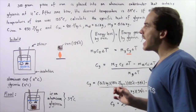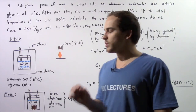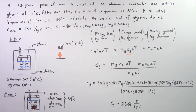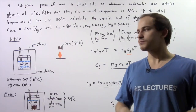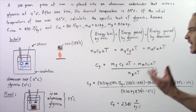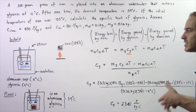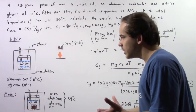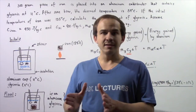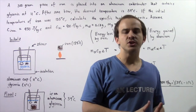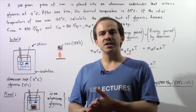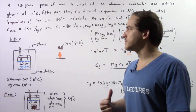We plug that into our calculator and we see that the specific heat of glycerin is 2,361 joules per kilogram times Celsius. So once again, we were able to use the concept of calorimetry to calculate the specific heat of a certain substance, knowing the specific heats of other substances.